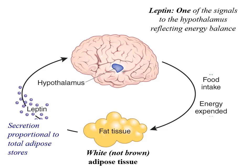At the time, finding a hormone related to the amount of fat you had was very exciting. Leptin is secreted by white, but not brown, fat tissue, and the more fat tissue you have, the more leptin you produce. One of leptin's sites of action is the hypothalamus, where it helps regulate food intake and energy expenditure.